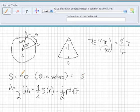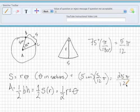So R times theta, 5 pi over 12 radians. That gives us an arc length of 25 pi over 12.